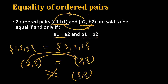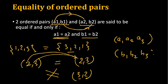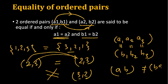For ordered pairs, we always do element-wise comparison. Similarly, if we have an ordered triple (a1, a2, a3) and compare it with (b1, b2, b3), we compare element-wise because these are ordered pairs. One ordered pair (a, b) is different from (b, a). That's all for Cartesian products — see you in the next lesson, thank you.